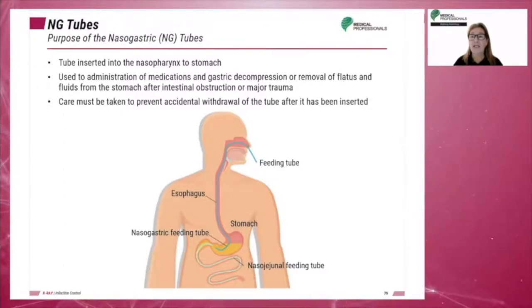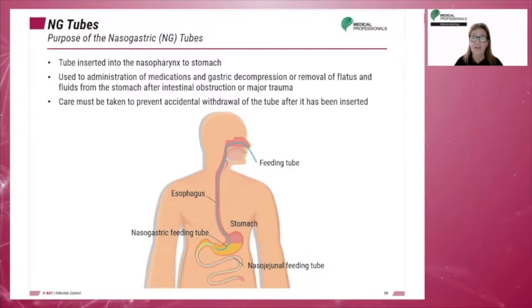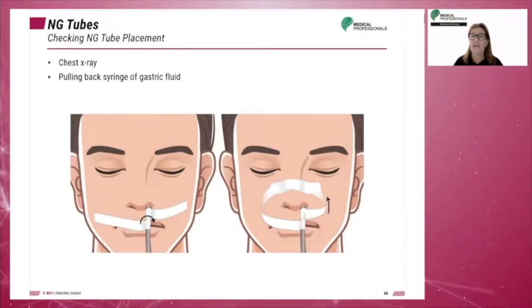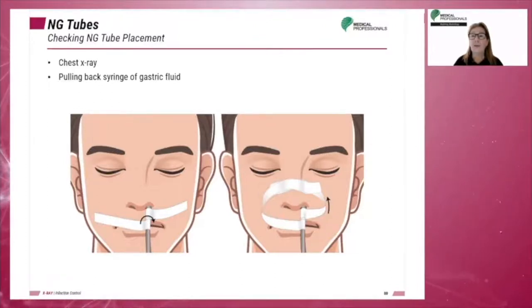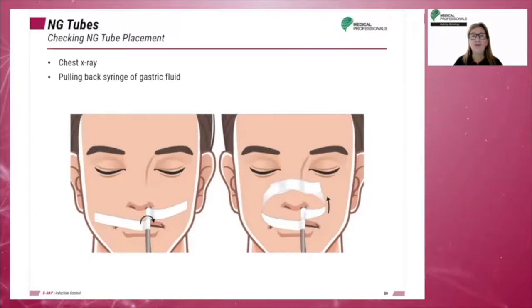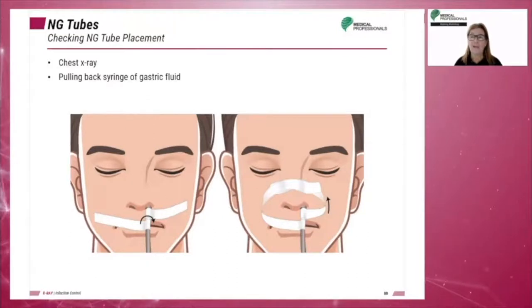Care must be taken to prevent accidental withdrawal of the tube after it has been inserted. A chest x-ray can be performed to check NG tube placement. The physician or nurse can perform a preliminary check by attaching a syringe to the end of the tubing and pulling gastric fluid. The tube is usually taped to the patient's face to prevent accidental withdrawal.